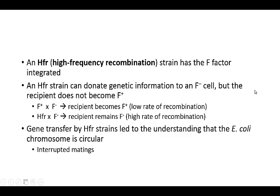Some bacteria have what we call HFR strains — high-frequency recombination strains. They have the F-factor, but it's actually integrated into their own chromosome rather than on a separate plasmid. These HFR strains can donate genetic information to F-minus cells; however, because the recipient isn't getting the F-plasmid, it remains F-minus. With regular F-plus by F-minus crosses, the recipient becomes F-plus but recombination is low. In HFR strains, the rate of recombination is high, and this led to our understanding that the chromosomes in E. coli are circular.